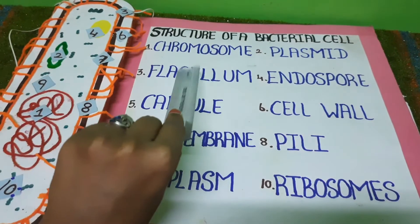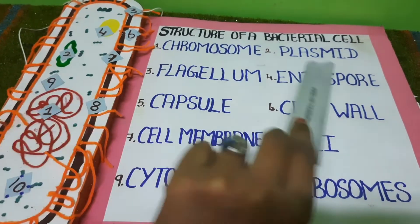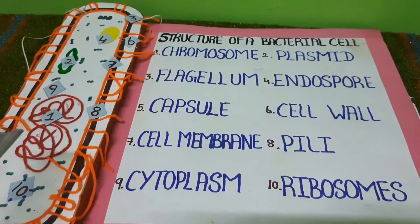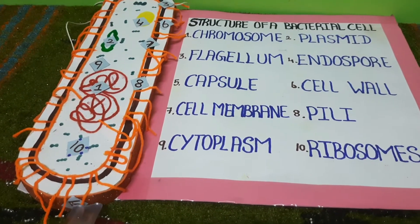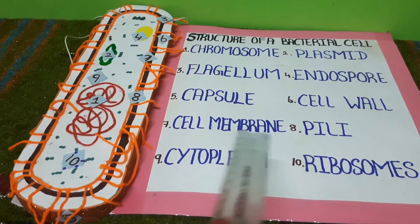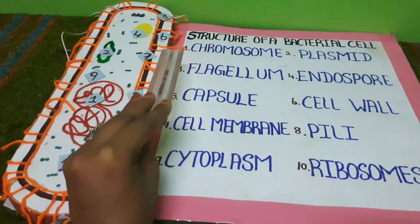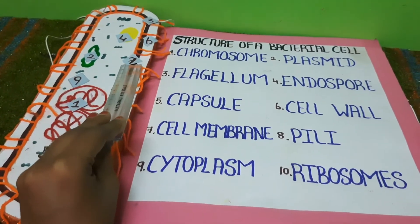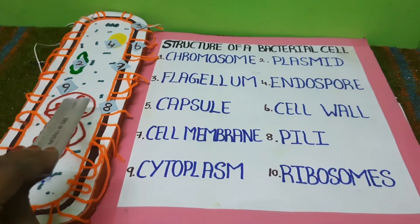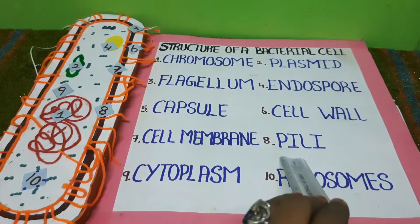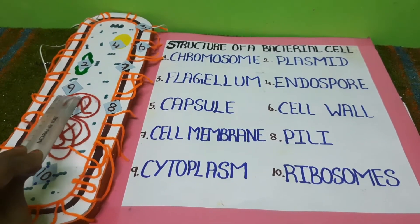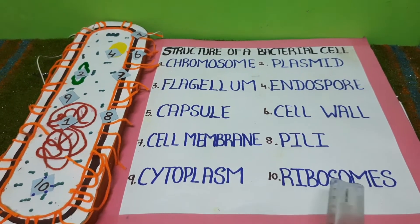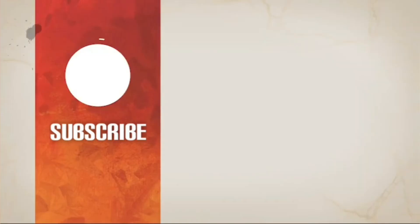Fourth one is the endospore. Fifth one is the foam sheet — that is the capsule. So the bacterial cell capsule is fifth. Sixth one is the cell wall — the brown color we use is the cell wall. Seventh one is the cell membrane. Eighth one is the pili. Ninth one is the cytoplasm — the space is the cytoplasm. Tenth one is the ribosomes.